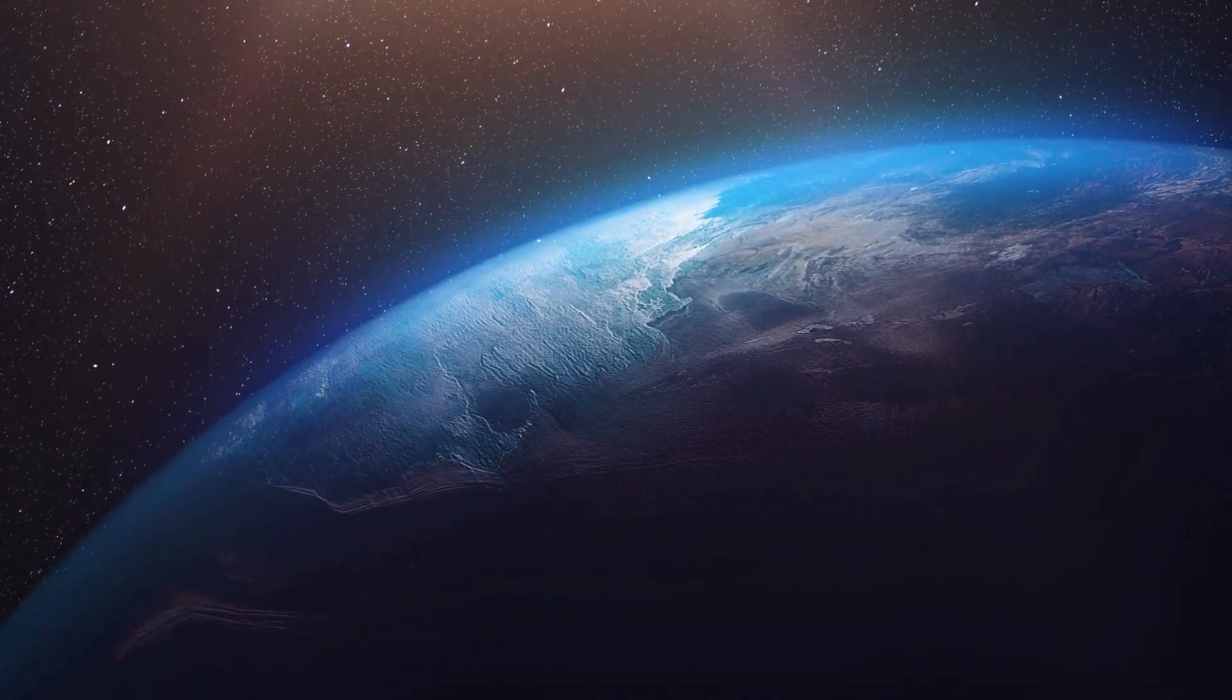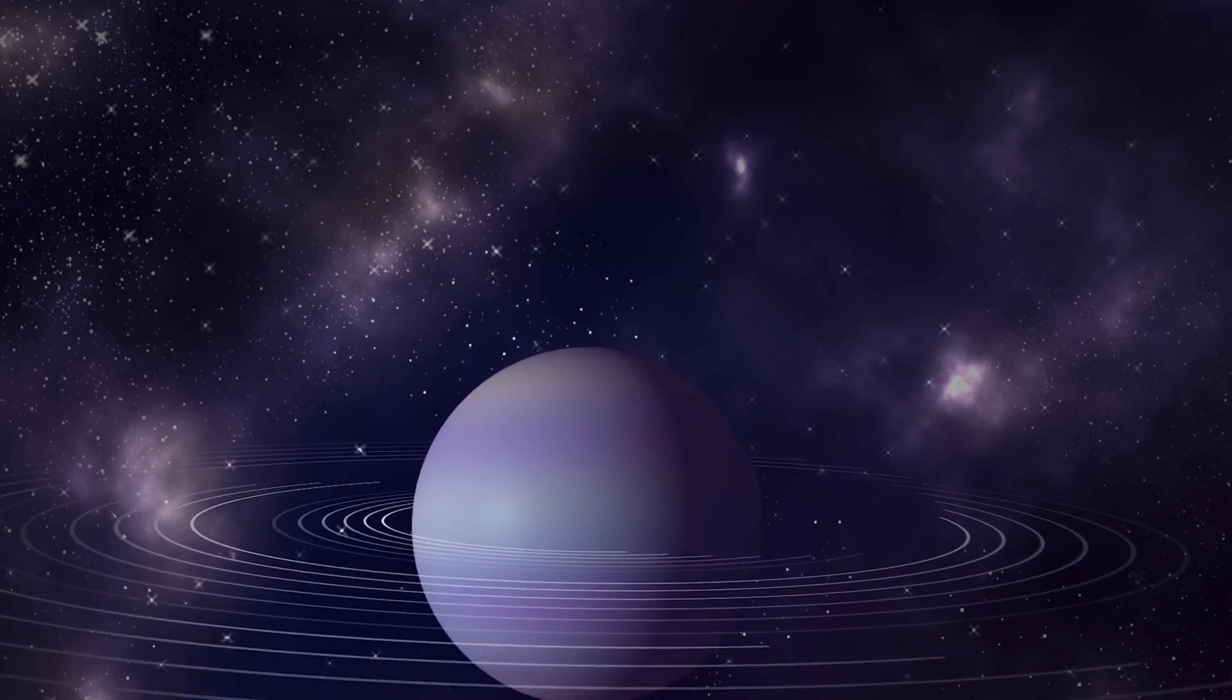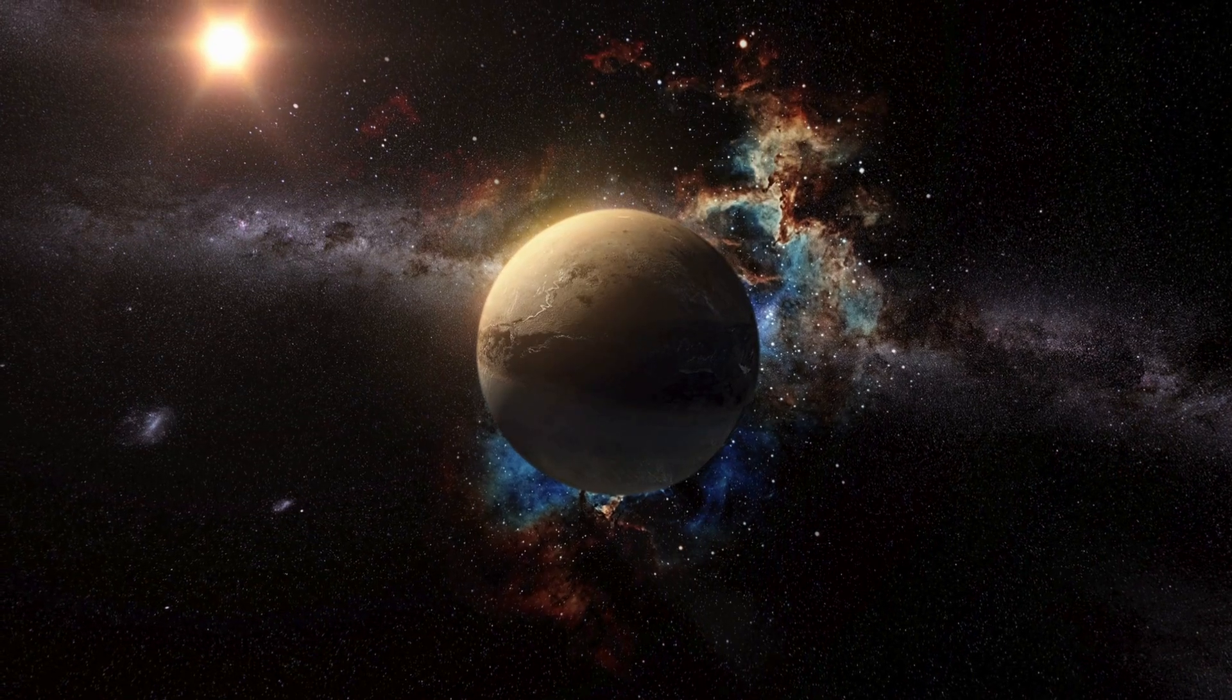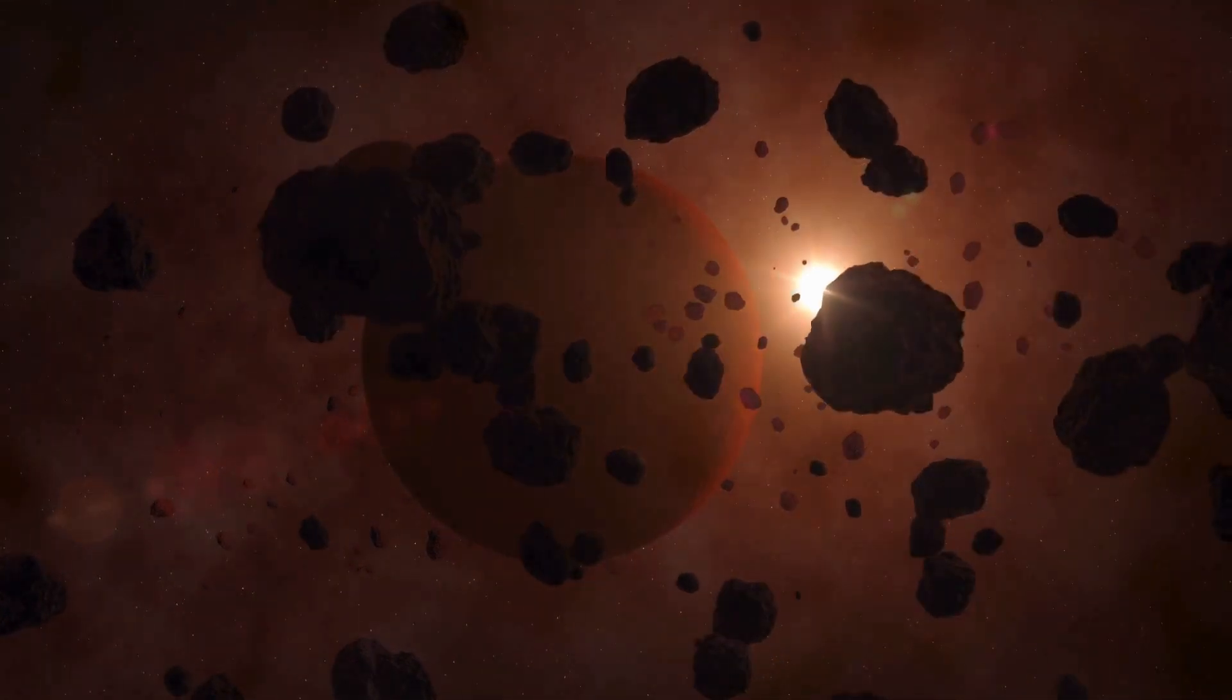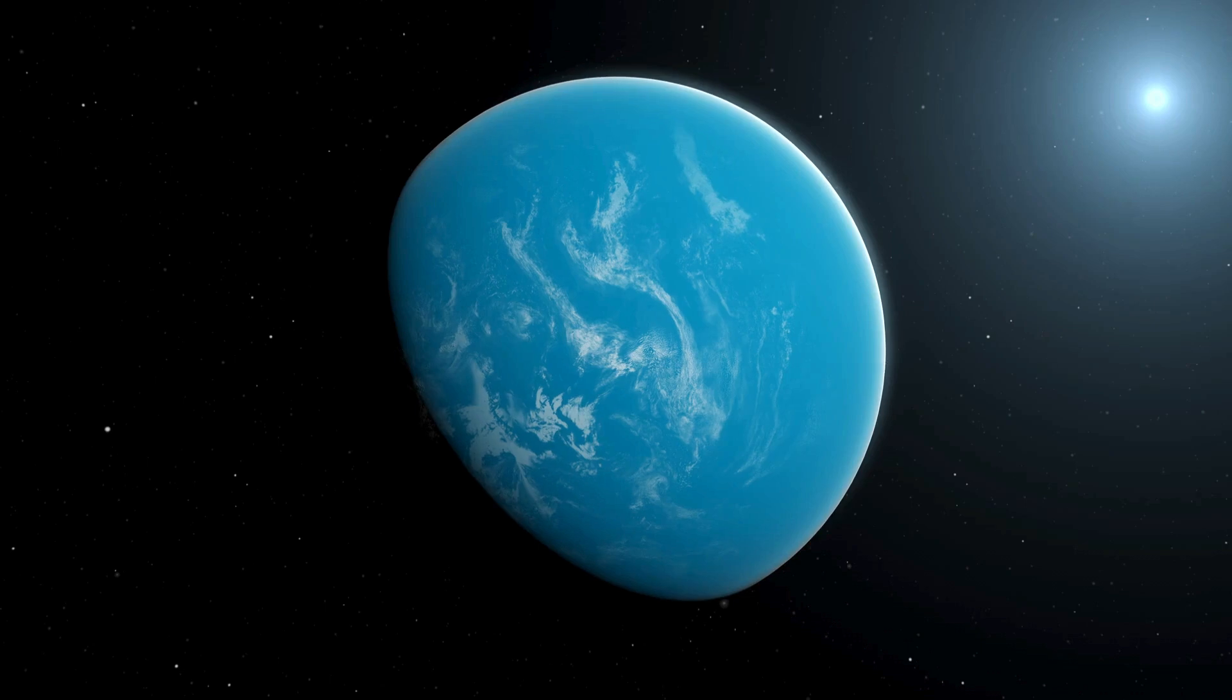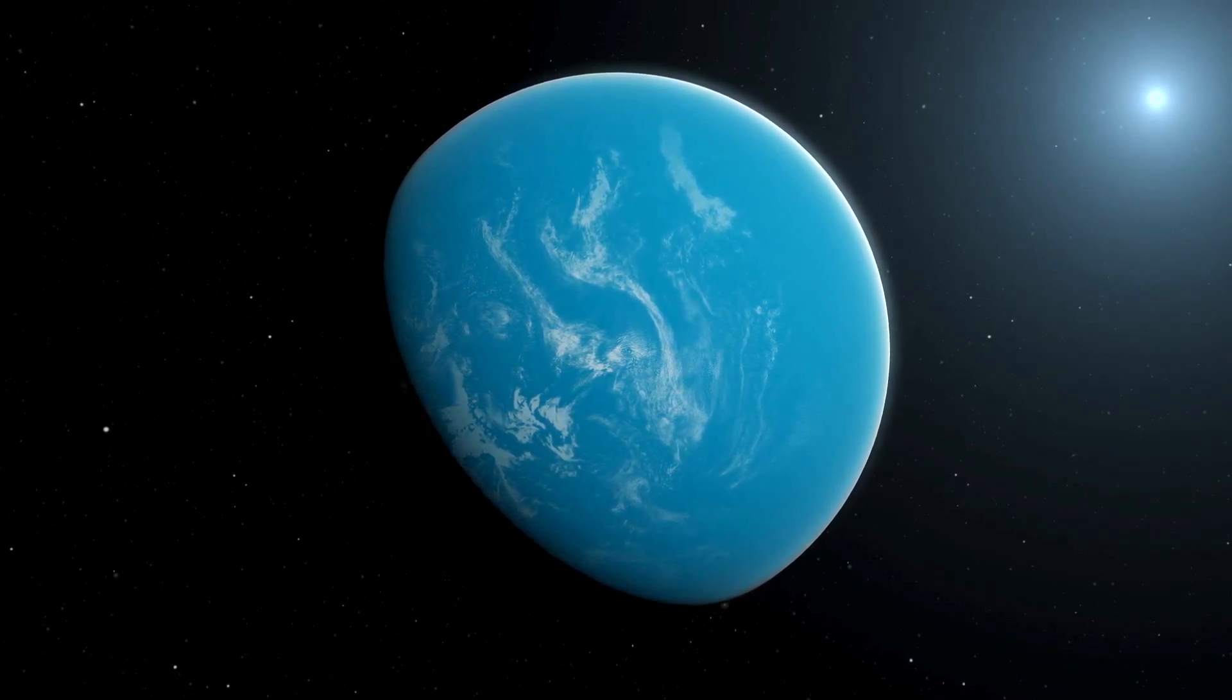In this video, we're going to explain how this advanced computational system analyzed layers of complex data to highlight what could be evidence supporting the Planet 9 hypothesis. We'll break down the process, examine the data, and explore what this means for our understanding of the outer solar system and for astronomy as a whole.